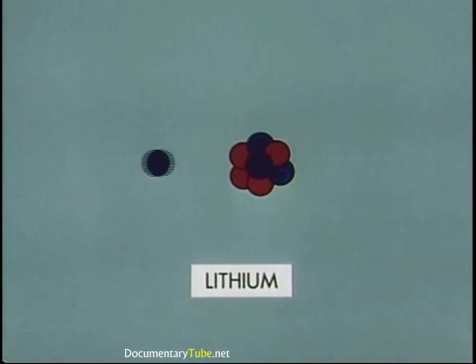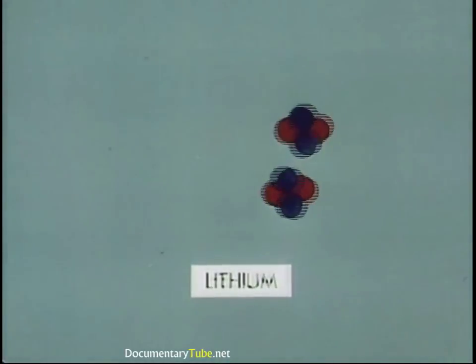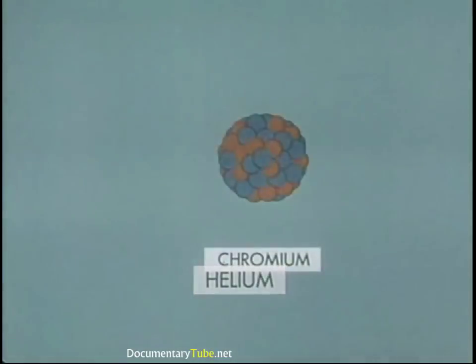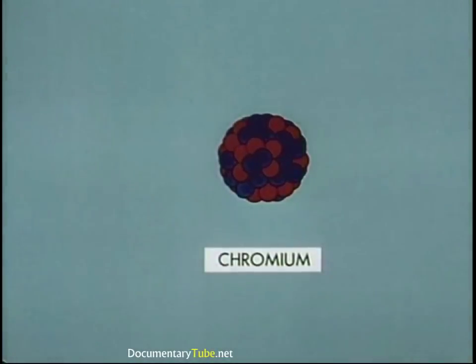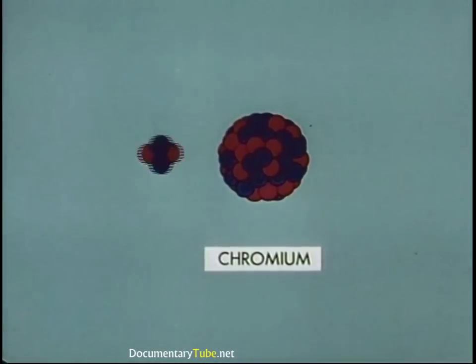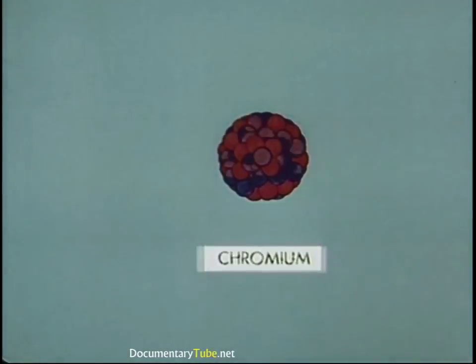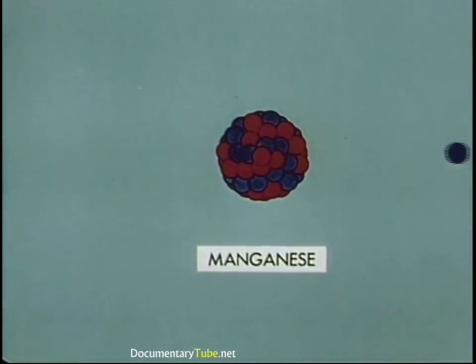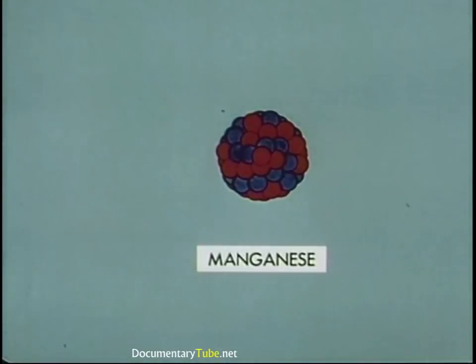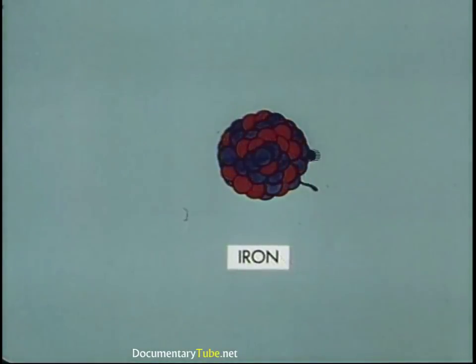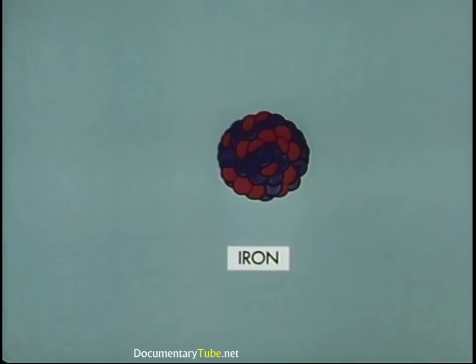He transmutes lithium into helium with a hydrogen nucleus as the projectile. By striking the nucleus of a chromium atom with a helium nucleus, he changes it into radioactive manganese with the emission of a proton. Manganese, in turn, decays to iron with the emission of a beta particle and gamma ray.